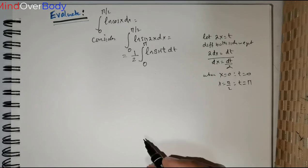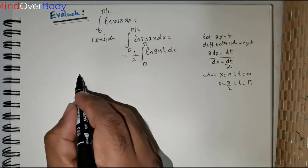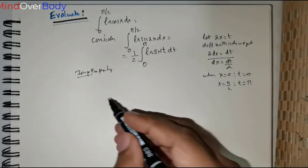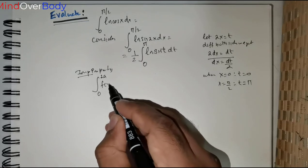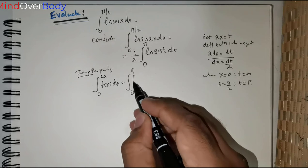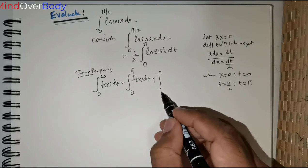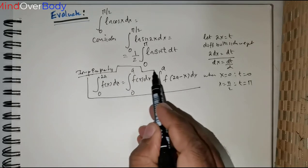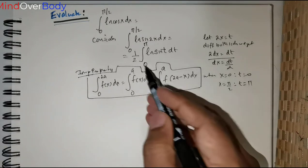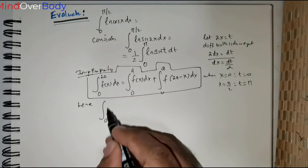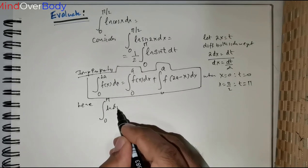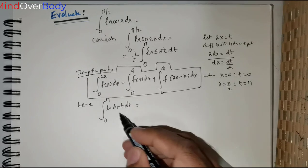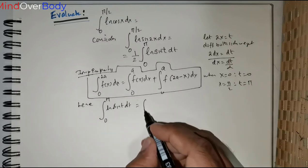There is a very important property in definite integrals. You can use this property to solve many questions which are otherwise impossible to solve. The property is: ∫₀^(2a) f(x) dx can be split into ∫₀^a f(x) dx + ∫₀^a f(2a − x) dx. Remember this property. Using it, I would rewrite ∫₀^π ln(sin t) dt — here 2a = π so a = π/2.